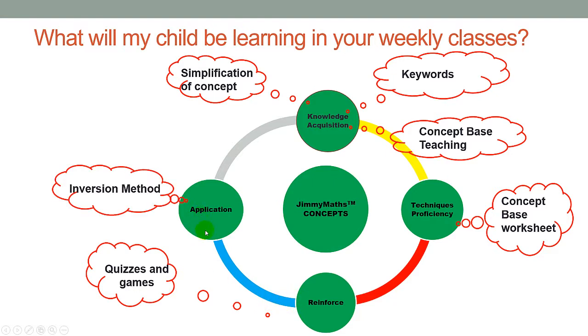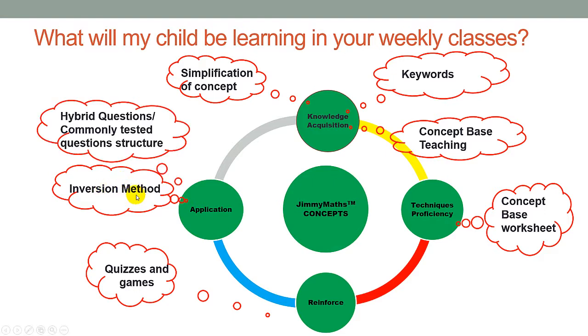And after reinforcing, we will go to the application phase. This is where we actually show your child the inversion method, where we show your child the mistakes made by other students and teach your child to avoid them. And of course, we also have hybrid questions. Hybrid questions are the four and five marks questions in paper two that consist of multiple concepts in one question. Then from there, we will go in a cycle until your child has reached mastery of every concept.